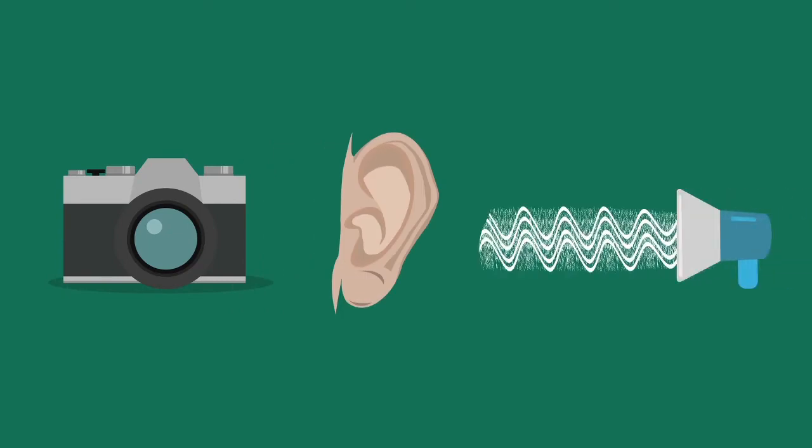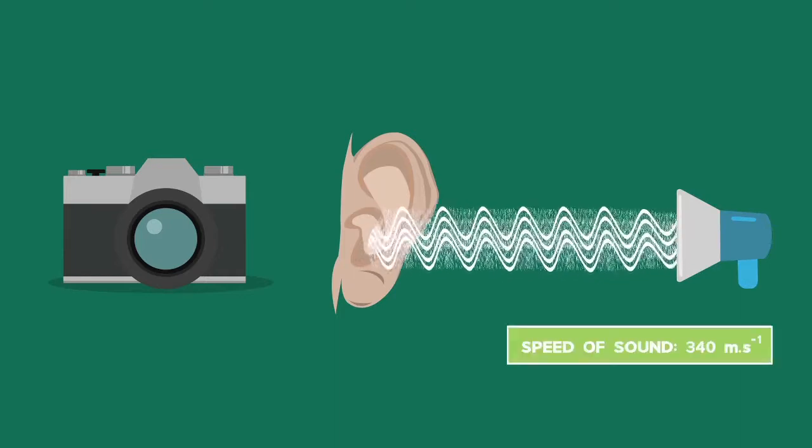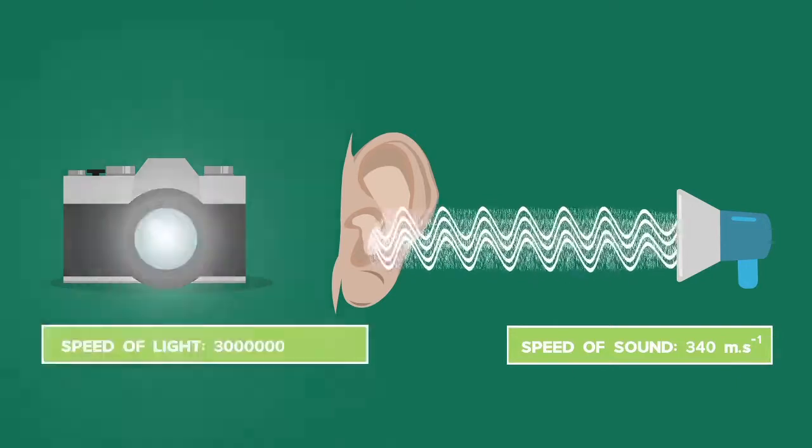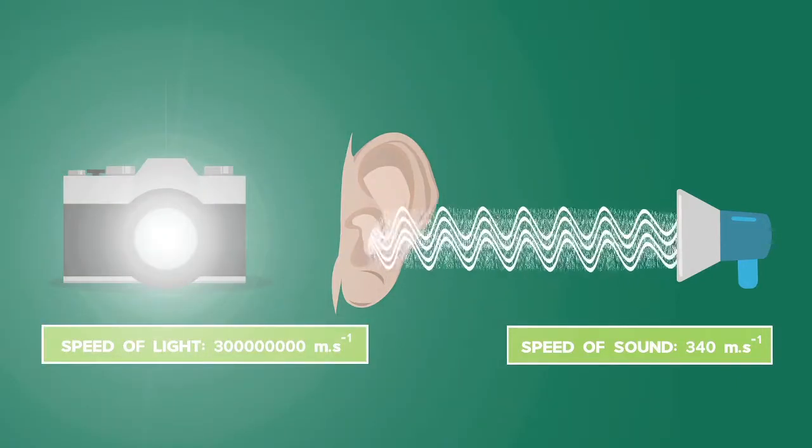So the idea is this. Waves move at a particular speed that depends on the medium they are traveling through. That speed doesn't change unless the medium changes. Sound moves at around 340 meters per second. Light moves at 300 million meters per second. Now, how does a frequency change?